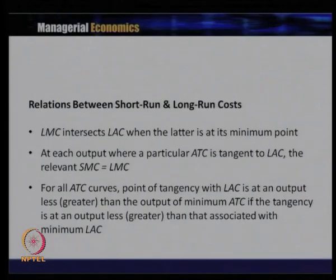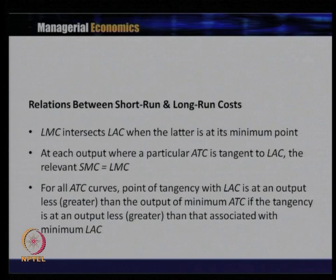Regarding the relationship between the short-run and long-run cost curves: the long run marginal cost curve intersects the short run average cost curve when the latter is at its minimum point. At each output where a particular ATC is tangent to the LAC, the relevant SMC equals LMC. We will examine this relationship using the long run average cost curve and how it becomes a series of short run average cost curves.